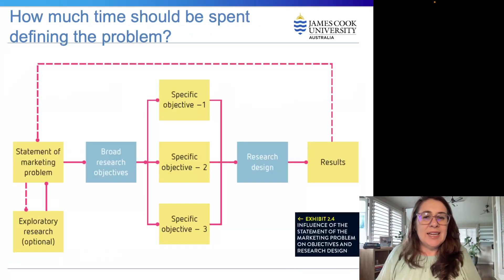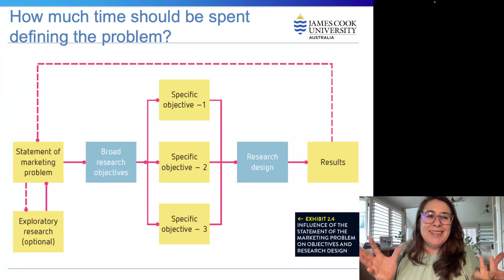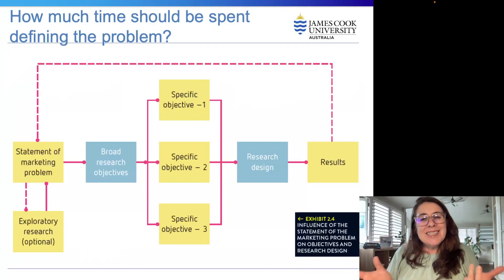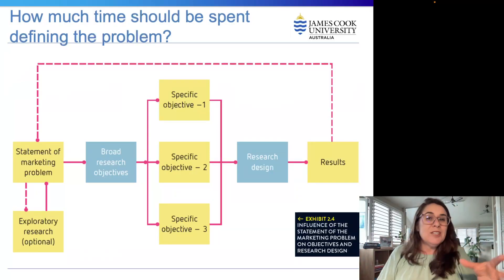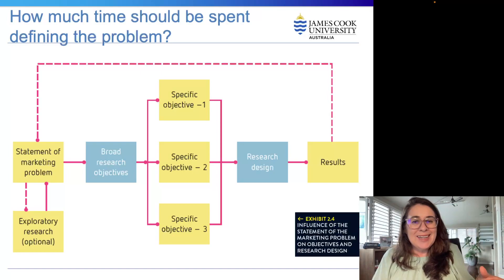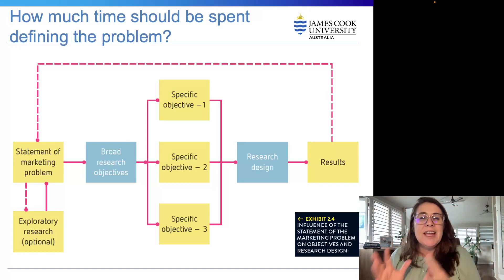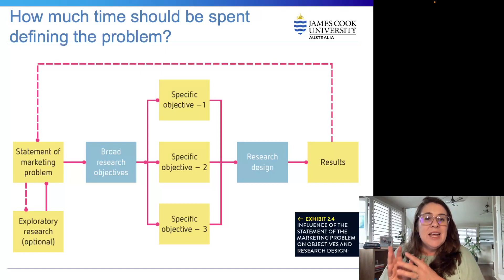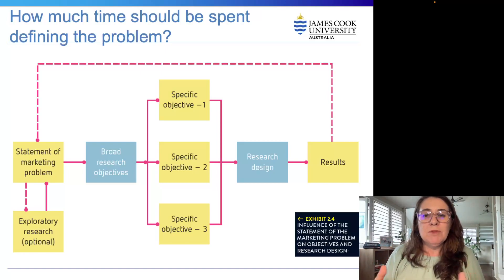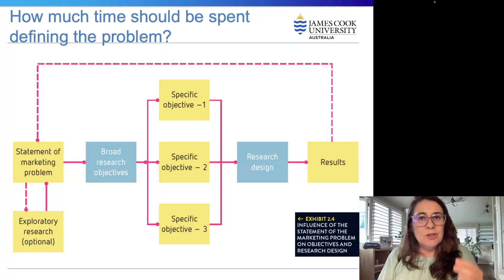The statement of the marketing problem influences the research objectives, which become the basis for the research design. It is impractical to search for every conceivable cause and minor influence of a problem, so the significance of a problem will usually indicate the amount of time and money needed to determine the most likely explanation.